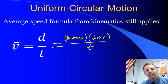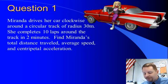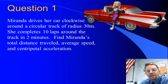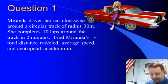So let's take a look and see how this actually works out in a couple example problems. Question 1. Miranda drives her car clockwise around a circular track of radius 30 meters. She completes 10 laps around the track in a total of 2 minutes. Find her total distance traveled, her average speed, and her centripetal acceleration.